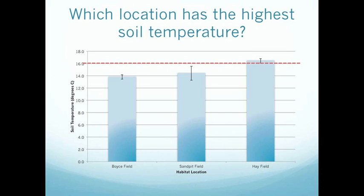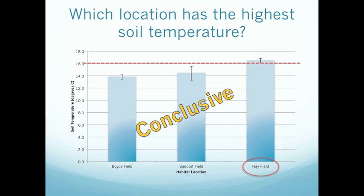As we can see, this line does not overlap with any of the other error bars, and therefore the majority of the data that was collected about the soil temperature for the Hayfield is significantly different from that of the Sandpit or Boyce field. And so, we can say that Hayfield, in fact, has the highest soil temperature. And it's conclusive.